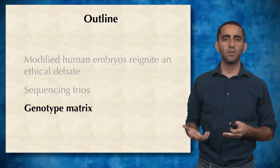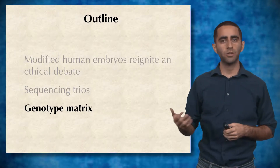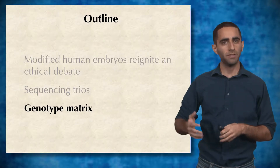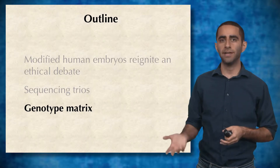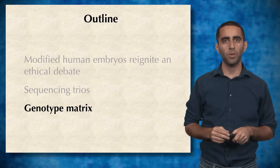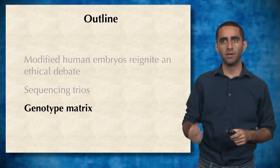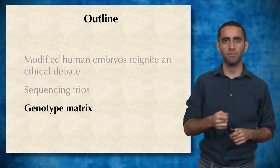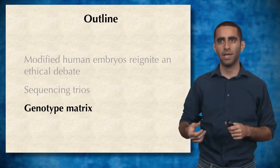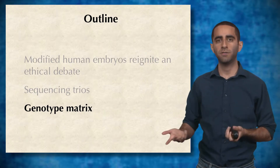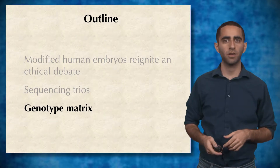Imagine that we've sequenced the mother, father, and child, and we've detected all the variants in each. We want to now determine which of the child's variants were inherited from which parent, and what the potential function of those variants are.